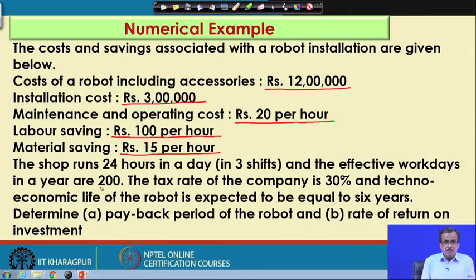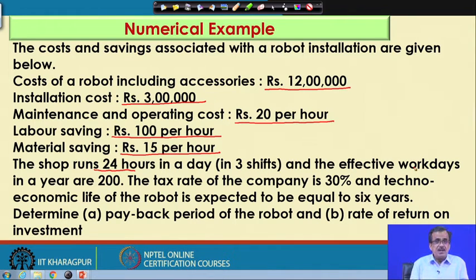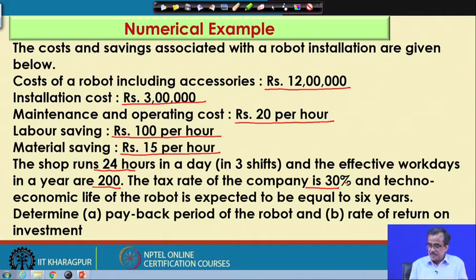Supposing that this particular shop is running for 24 hours in a day — that means there will be 3 shifts, each shift equivalent to 8 hours — and the effective workdays in a year are say 200. The tax rate of the company is 30 percent and the techno-economic life of the robot is expected to be equal to 6 years.